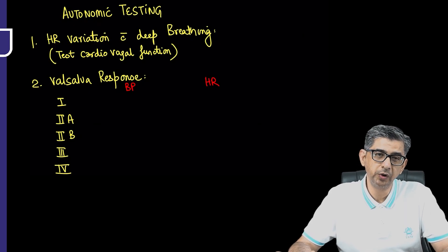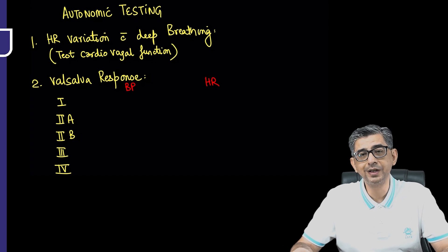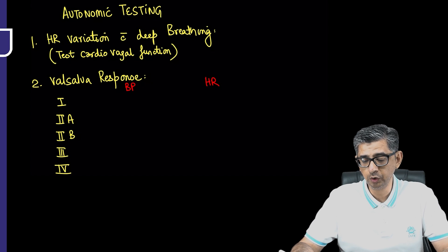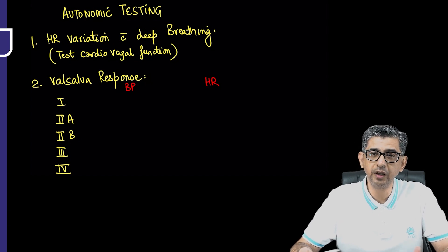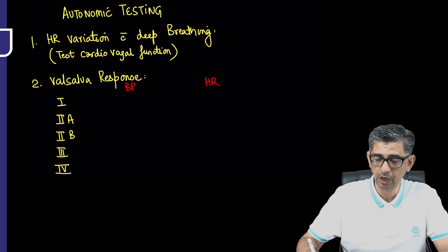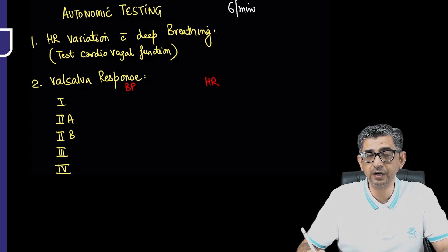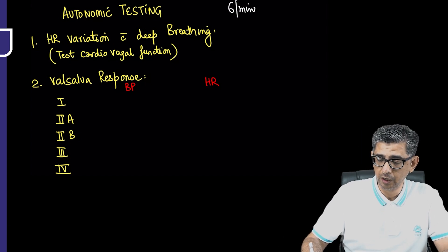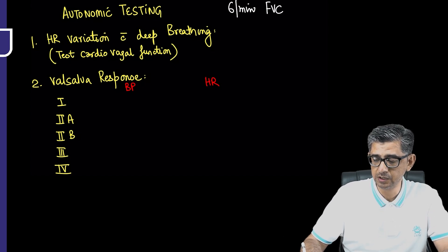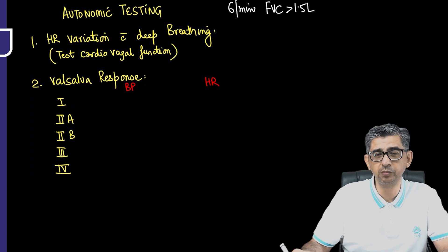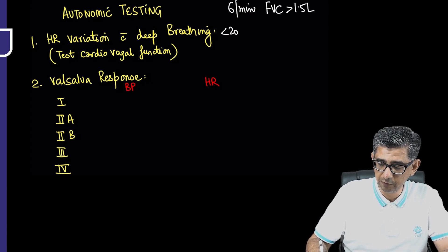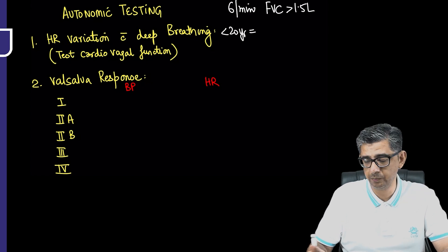We'll be doing an approach to a patient with orthostatic hypotension and also performing some autonomic testing. The first test is heart rate variation with deep breathing, which involves the vagus nerve. We'll do a couple of practice runs, and the number of breaths we'll ensure the patient takes is six breaths per minute. The FVC needs to achieve about 1.5 liters, so it requires a bit of practice.